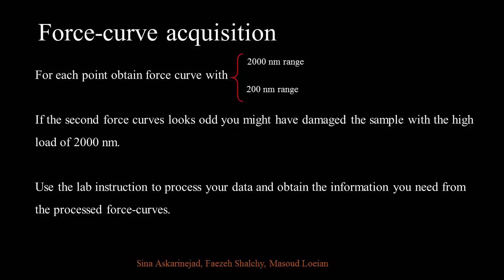For each point — matrix or circular inclusion — obtain force curves at two different ranges: 2000 nanometers and 200 nanometers. If the second force curve looks odd, you might have damaged the sample with the high load of the 2000 nanometer range. If so, you can obtain the 2000 nanometer range force curve from another point.